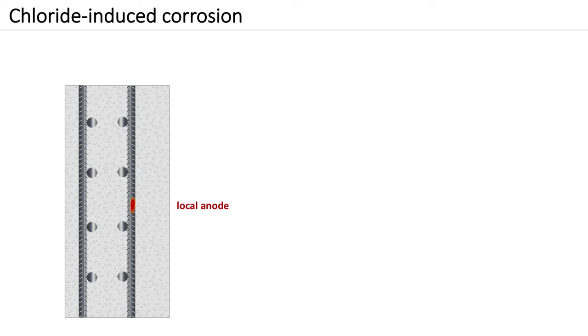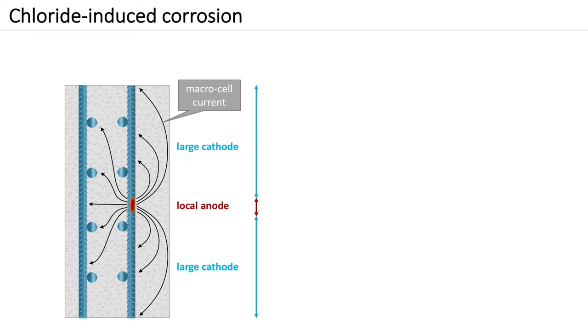The anodic area, here indicated in red, is often much smaller than the cathodic area shown in blue. The spatial separation of anode and cathode leads to a galvanic current flowing through the concrete. This type of corrosion is also referred to as macro cell corrosion, because the galvanic element can have dimensions of up to one metre or even beyond.